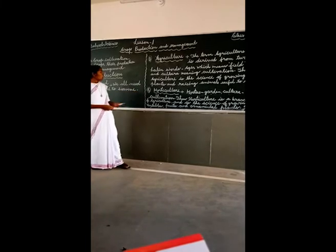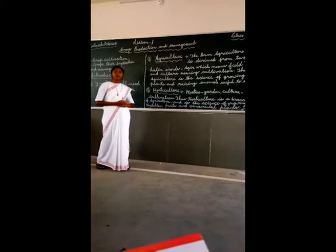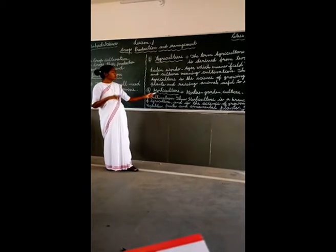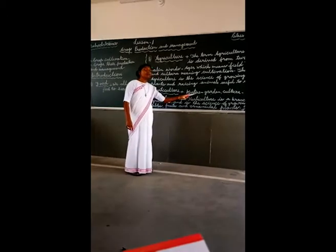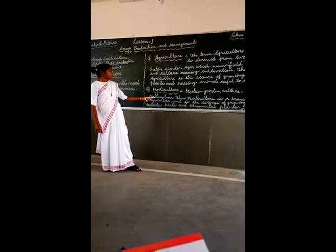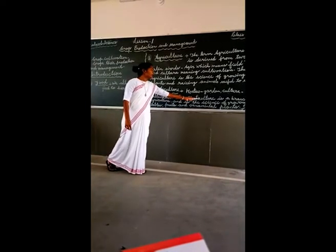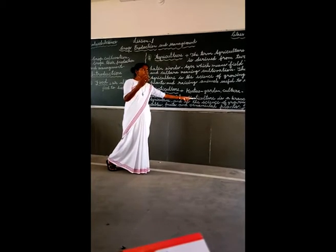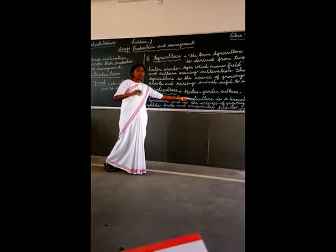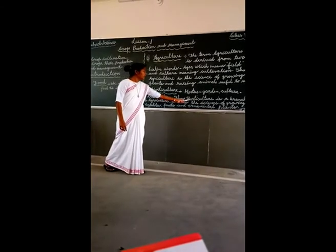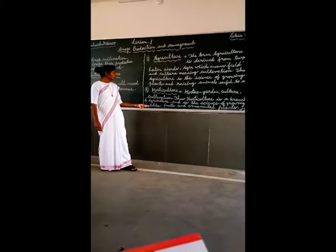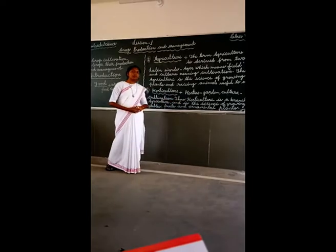Point number 3: Horticulture. What do you mean by horticulture? This word is also made up of two parts: 'horti,' which means garden, and 'culture,' which means cultivation. Horticulture is a branch of agriculture — just as a tree has a trunk with branches, horticulture branches from agriculture — and it is the science of growing vegetables, fruits, and ornamental plants.